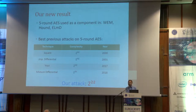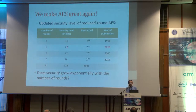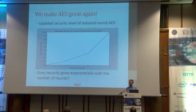This is our attack. Why does it make AES great again? Let's look at the updated security level of reduced-round AES, with this result of 2^22 for 5 rounds. Does the security now grow exponentially with the number of rounds? We see the graph — yes. Now we have made AES great again.